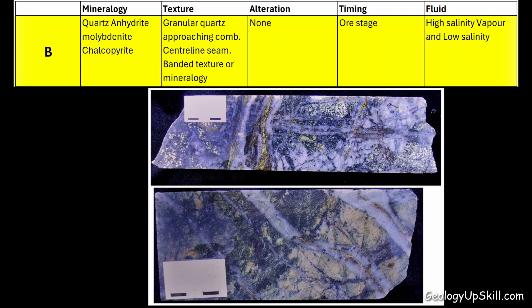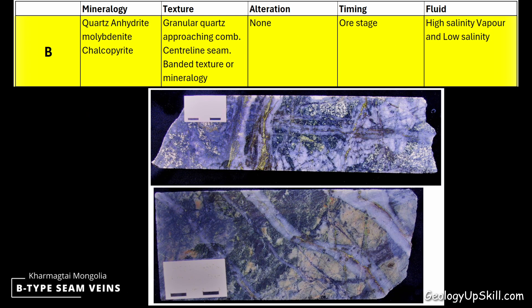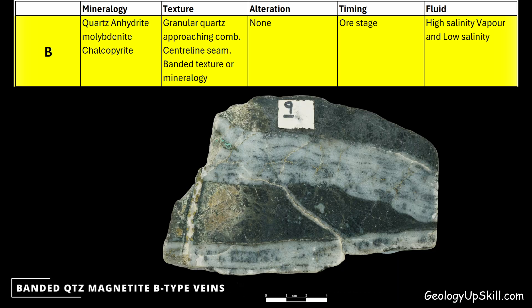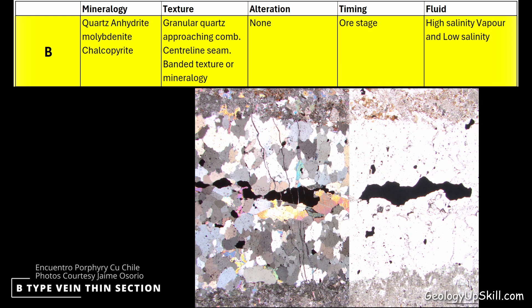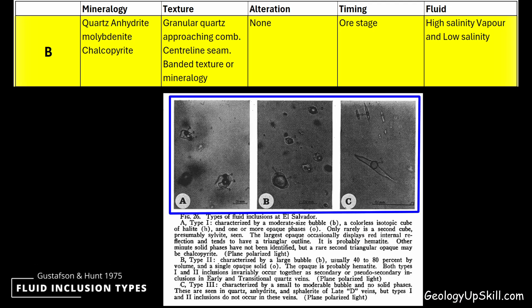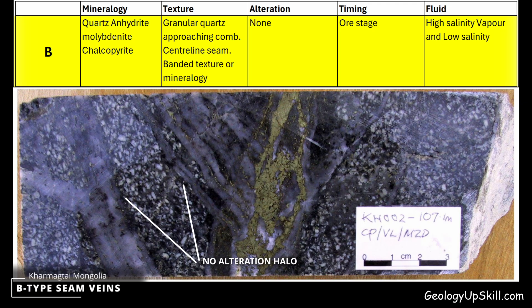B-type veins are more planar stockworks filled with quartz, anhydrite, molybdenite and chalcopyrite. Centreline seams are common. Mineralogy and texture are commonly banded parallel to the vein walls. The quartz is granular and approaches fine comb texture. Fluid inclusions are similar to A-veins but less abundant and include some low salinity types. Lack of alteration halos was a key characteristic of B-type veins in the original definition, unless the vein structure had been reactivated by later hydrothermal events.